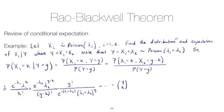And so you can get that by rearranging those factorial terms. And then we should also have a lambda one over lambda one plus lambda two raised to the k and then a lambda two over lambda one plus lambda two raised to the y minus k.